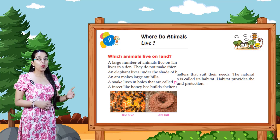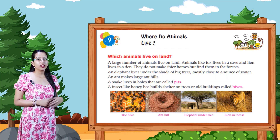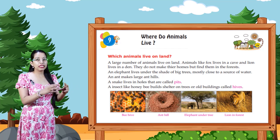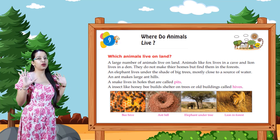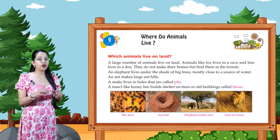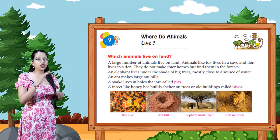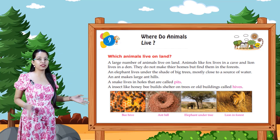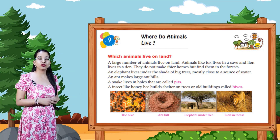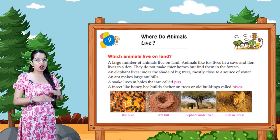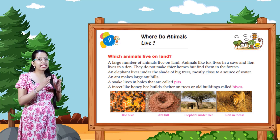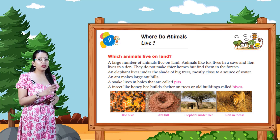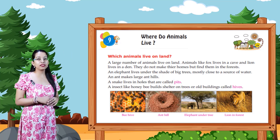Which animals live on land? A large number of animals live on land. Animals like fox live in a cave and lions live in a den. They do not make their homes but find them in the forest. An animal lives under the shade of thick trees, mostly close to a source of water. An ant makes a large anthill. A snake lives in holes that are called burrows.